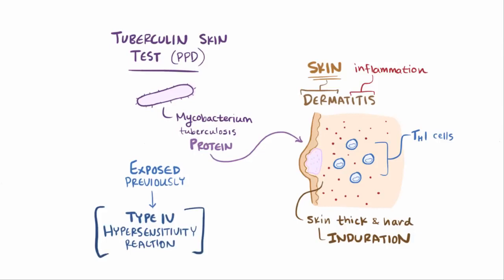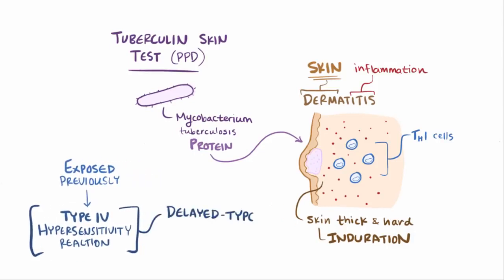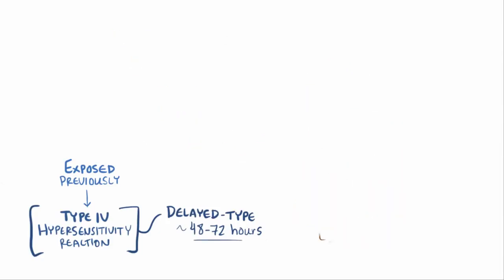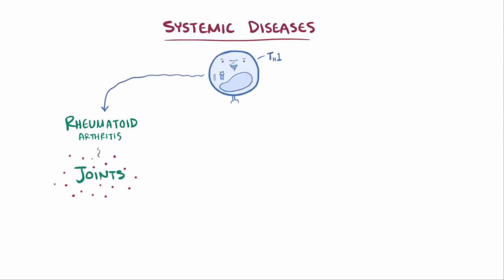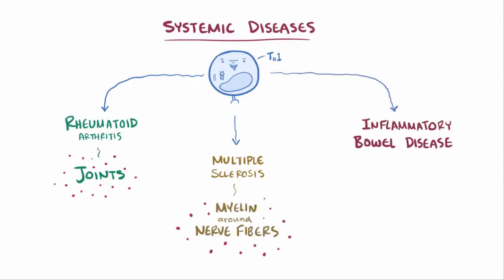A type IV hypersensitivity is also sometimes referred to as a delayed type hypersensitivity, since it usually takes about 48 to 72 hours to recruit TH1 cells to the site of exposure, so these skin reactions usually appear over that time window. Apart from skin-related reactions, type IV hypersensitivity is also involved in several systemic diseases like rheumatoid arthritis, where TH1 cells cause inflammation in the joints; multiple sclerosis, where TH1 cells damage myelin around nerve fibers; and inflammatory bowel disease, where TH1 cells cause inflammation in the lining of the intestine.